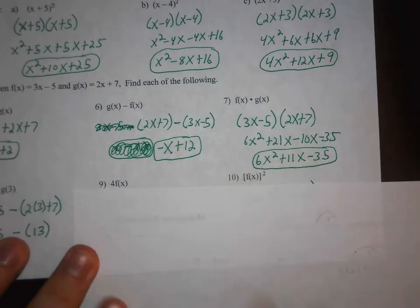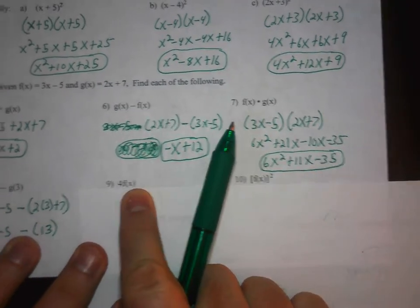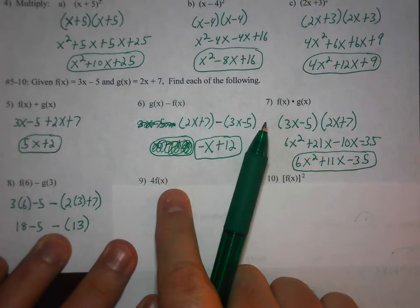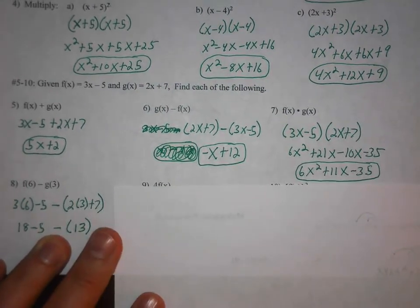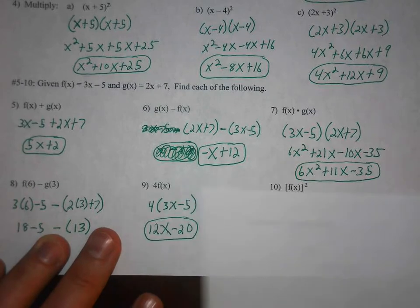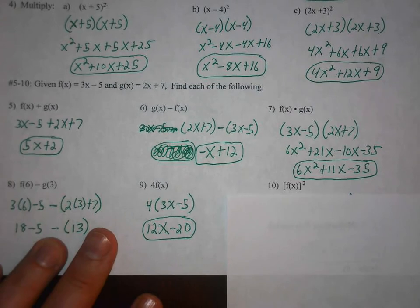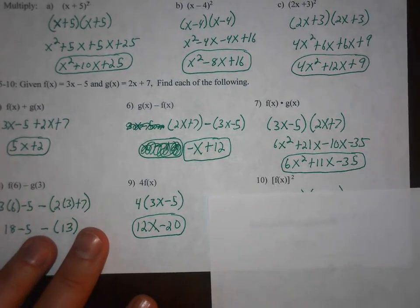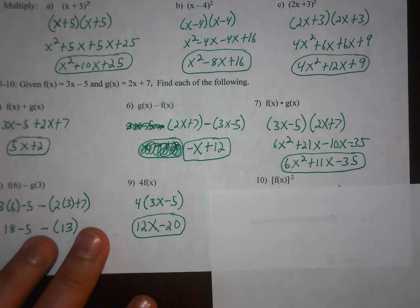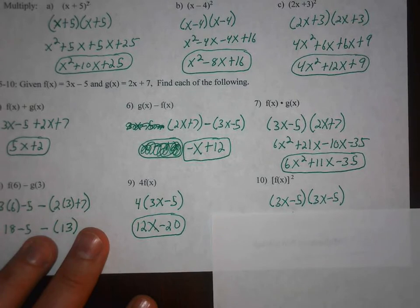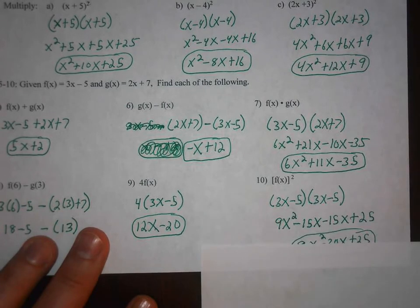Okay, and then in 9 and 10, we have 4 times f of x. So you're going to multiply the f function by 4. So 4 times 3x minus 5. And then in number 10, we're going to square the f function. So when you multiply 3x minus 5 by itself, there's your answer.